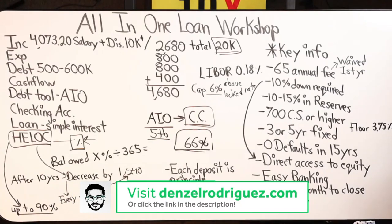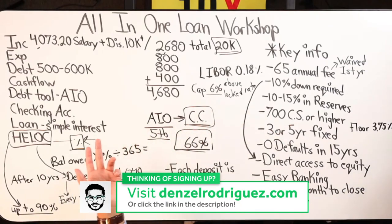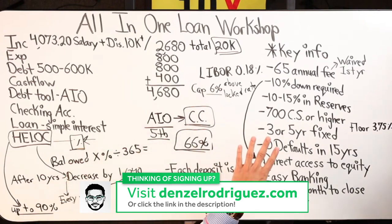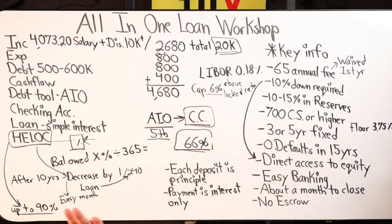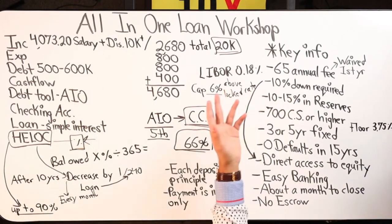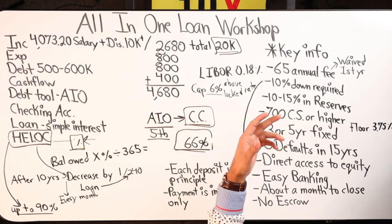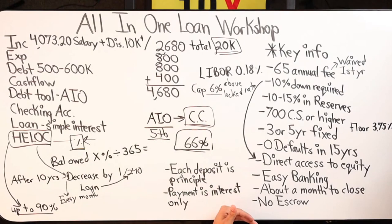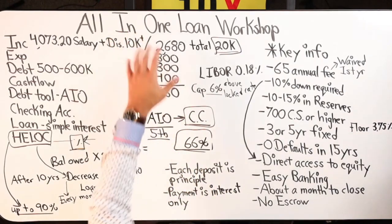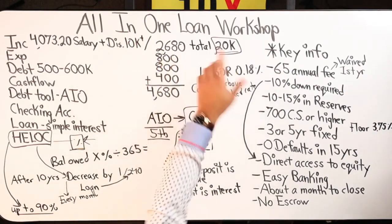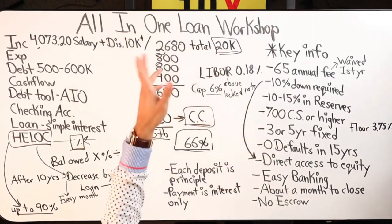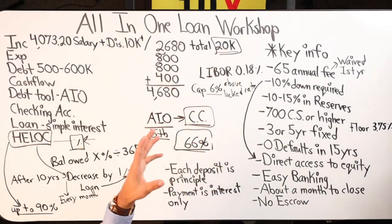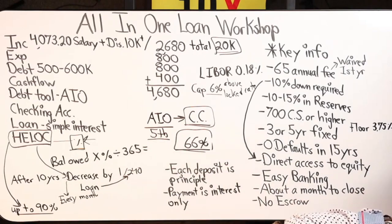Now let's go to the software. We're going to use numbers to show what it would look like to pay this thing off doing velocity banking, because what's great about this product is there's nothing additional that I have to do with the velocity banking concept — it's already there. I already have the debt tool, I can set up all my income to go in and out, I can set up bill pay, so it creates that convenience.